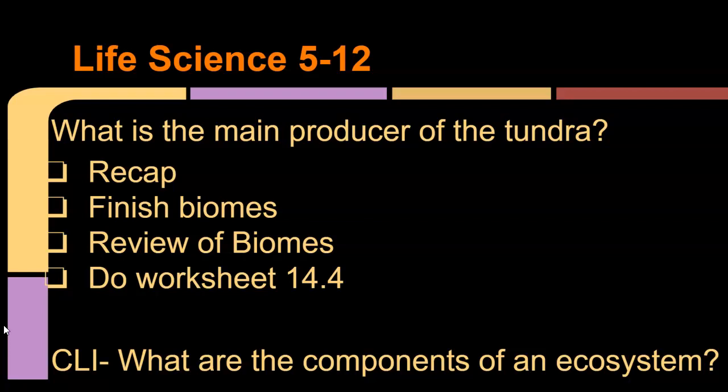Hi guys, Mr. Hescock's life science class. We are picking up with the second half of the types of biomes and their characteristics. The first one — your question from yesterday: what is the main producer of the tundra? The best answer here is lichens, the symbiotic relationship between a fungus and an algae. You also have some moss, some small shrubs, and some grasses.